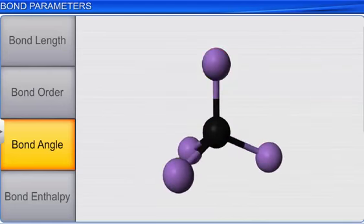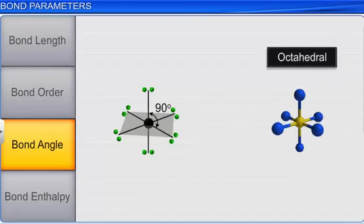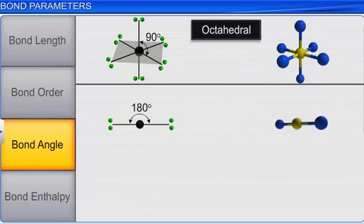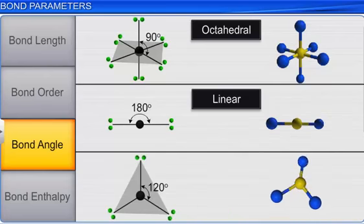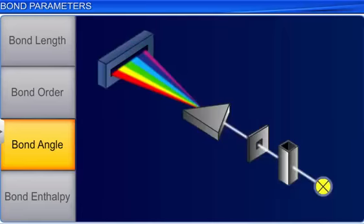Usually, when the bond angle is 90 degrees, the shape of the molecule is octahedral. When the bond angle is 180 degrees, the shape of the molecule is linear. Similarly, when the bond angle is 120 degrees, the shape of molecule is trigonal planar. Bond angles are measured using spectroscopic methods.